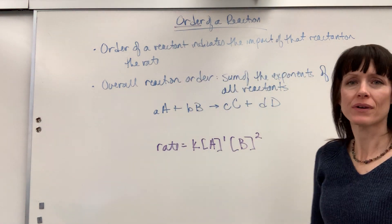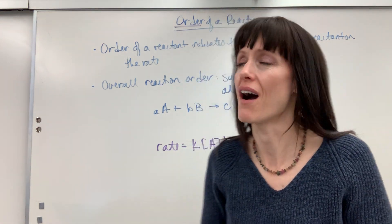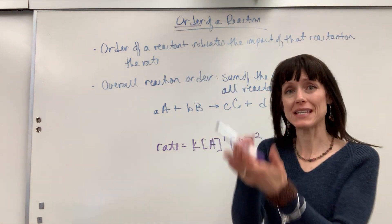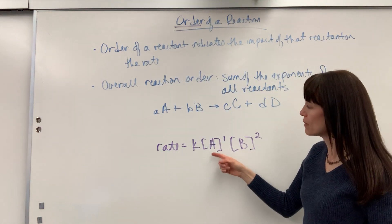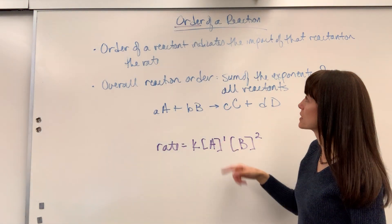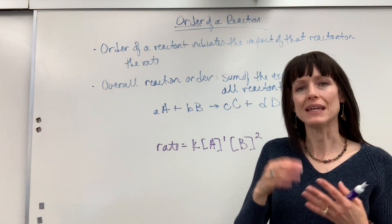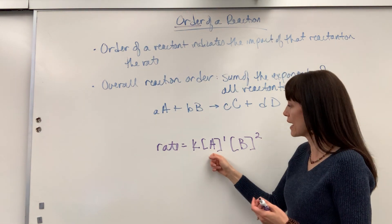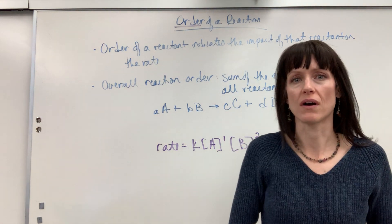So the order really is just the exponent that you find in the rate law. Now the order for a particular reactant, in this example I have A is first order. You see that exponent one. It indicates the impact that that reactant has on the overall rate.